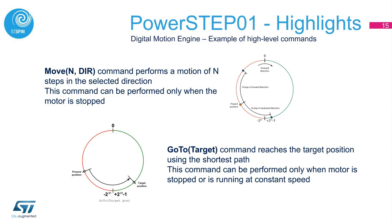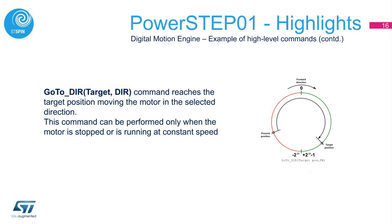Here are more examples of high-level commands. The Move command performs a motion of N steps in the selected direction and can be performed only when the motor is stopped. The Go To command reaches the target position using the shortest path, and can be performed only when the motor is stopped or running at constant speed. The Go To Dir command reaches the target position by moving the motor in the selected direction, again only when stopped or running at constant speed.